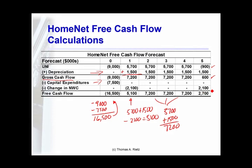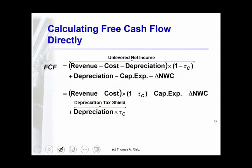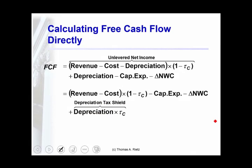Our working capital falls from $2,100 to zero, so that also comes back to us. Our overall cash flow, starting with an unlevered net income of minus $900, adding back depreciation, subtracting capital expenses and the change in working capital, gives us the final free cash flow.